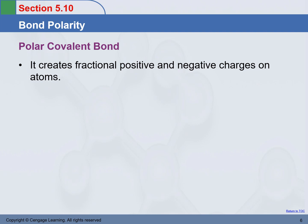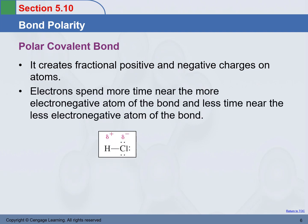A polar covalent bond creates a fraction of positive and negative charge on the atoms. If this pair of electrons is not sharing equally and stays closer to chlorine, it feels like in the chlorine area there is a partial negative charge. It is a partial charge because the electron is not totally lost to chlorine — if it were totally lost, chlorine would carry one full negative charge. In this case they are still sharing, however the pair stays closer to chlorine, so chlorine has a fractional negative charge and hydrogen has a fractional positive charge. You use delta to represent a fraction of a charge, be it positive or negative.